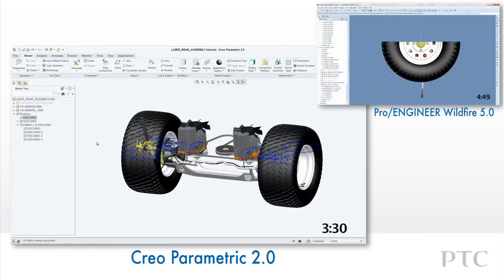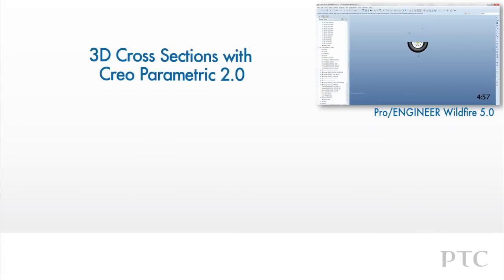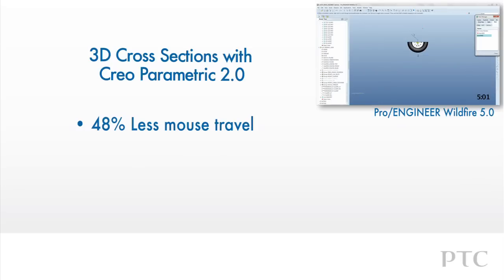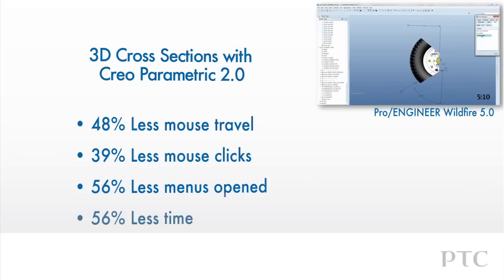We've shown some of the key highlights in creating 3D cross sections with Creo Parametric, including new capabilities and streamlined workflows. The result is improved design productivity — as even in this short comparison, I've saved 56% of the time taken to achieve the same result with Creo Parametric compared to Pro Engineer Wildfire.